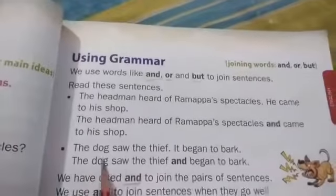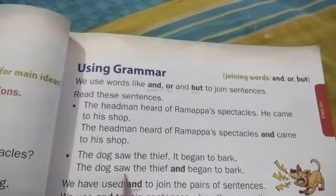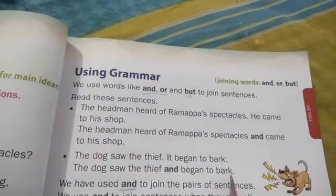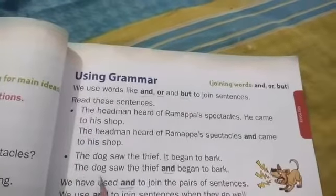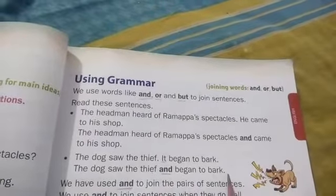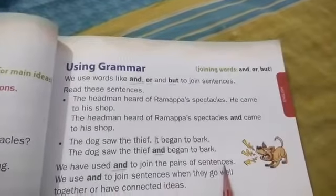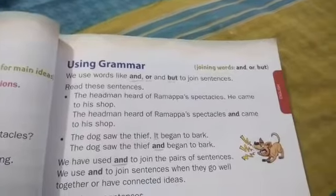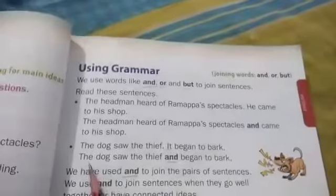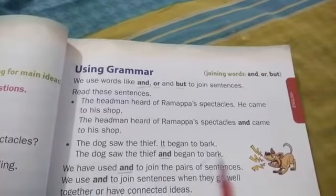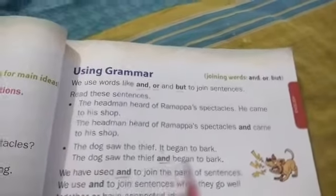See here. The dog saw the thief. It began to bark. The dog saw the thief and began to bark. Here we remove 'it' and use 'and'. Okay, the dog saw the thief and began to bark. Children, are you understood? We have used 'and' to join the pair of sentences when they go well together or have connected ideas.